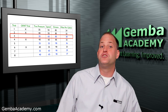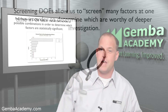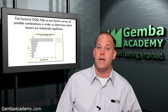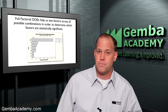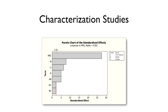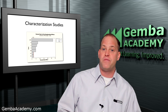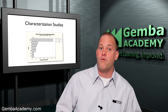To wrap this module up, let's introduce the three types of DOE we're going to explore in coming lessons. First, screening DOEs allow us to screen many factors at one time to determine which are worthy of deeper investigation. For example, with five factors, a screening DOE helps determine which of the five seems most significant. Next, full factorial DOEs help us test factors across all possible combinations to determine which are statistically significant — sometimes referred to as characterization studies. Since full factorial DOEs test every possible combination, they can take longer and cost more money, which is why screening designs are often used first to narrow the number of factors.